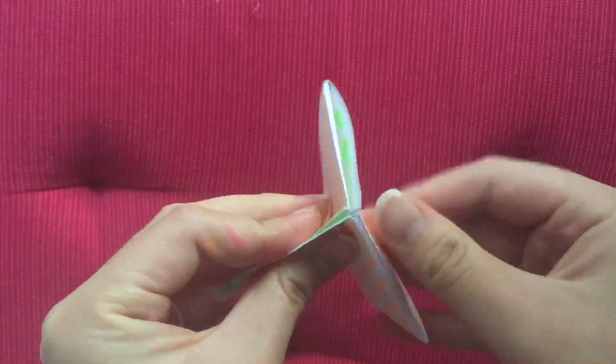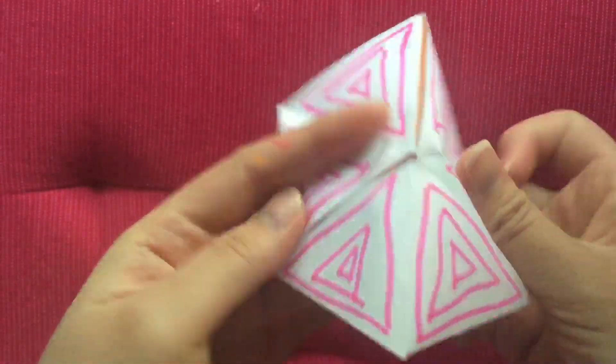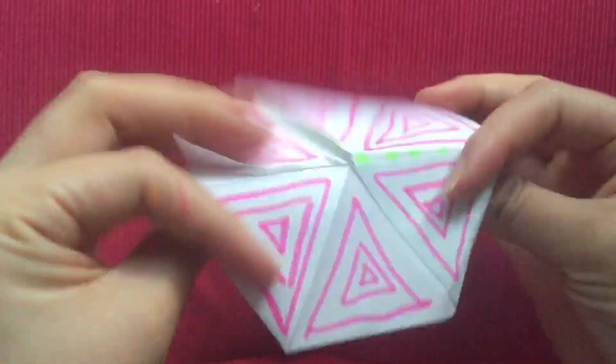Now by flexing your hexagon, you should be able to cause it to flip inside out and change colors three times. You flex it by pinching two adjacent triangles together.